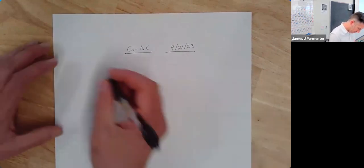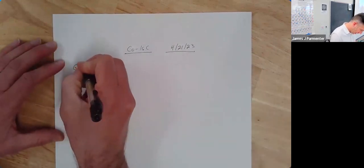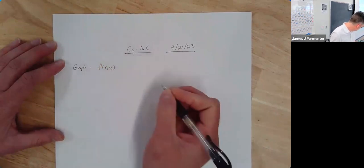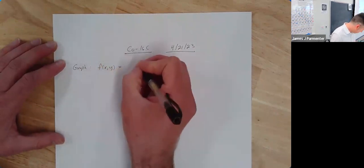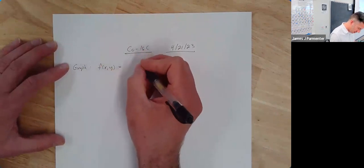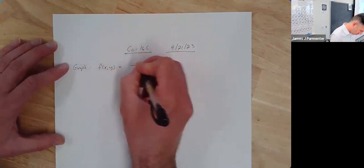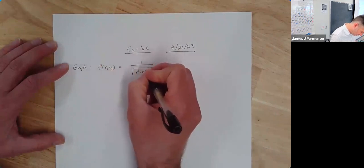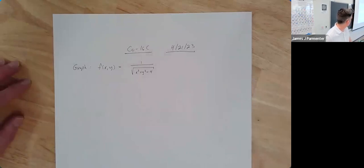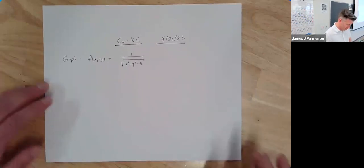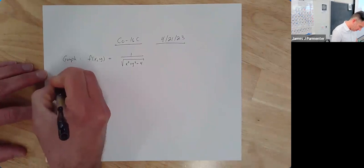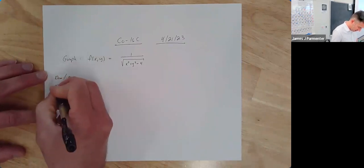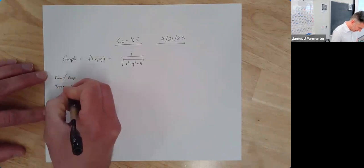Let's graph f(x,y) equal to 1 over the square root of x squared plus y squared minus 4. We're going to find the domain, range, draw some traces, and some level curves.